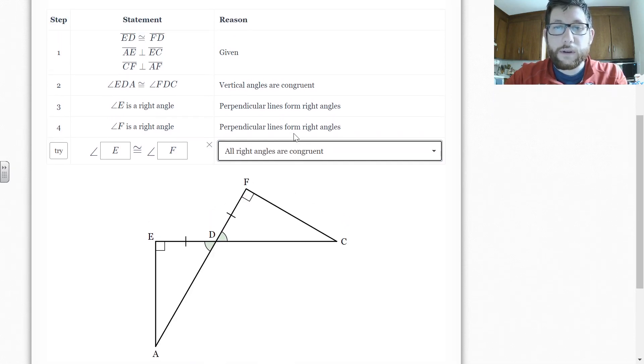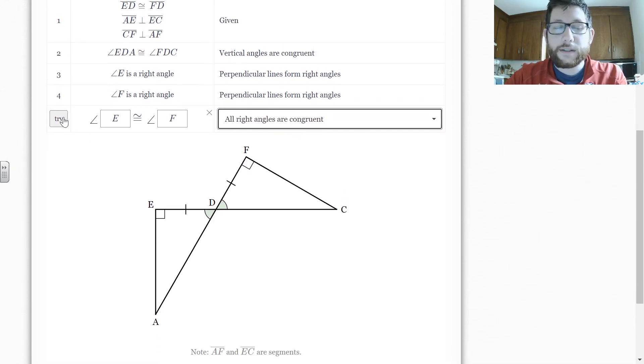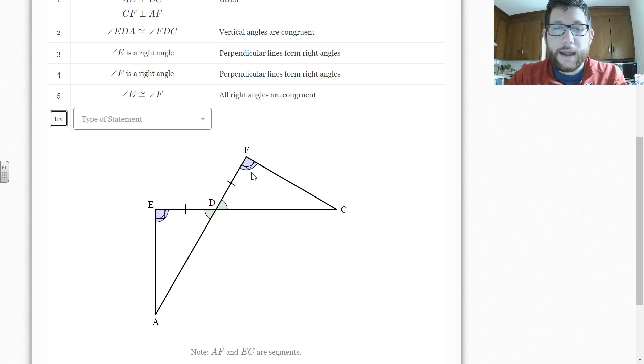So that's a specific reason, one that we haven't quite talked about. That's technically right. We've kind of taken some shortcuts doing our proofs to keep it simple. So technically we do want to say all right angles are congruent. So notice now I have the angles marked as congruent.